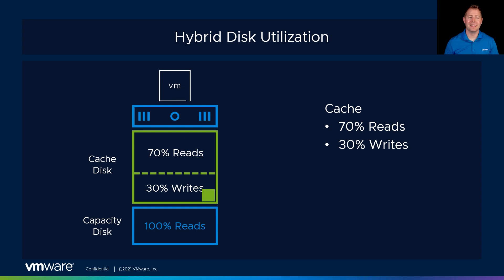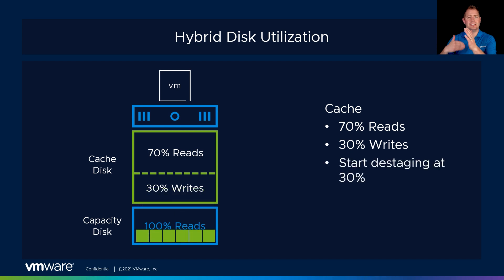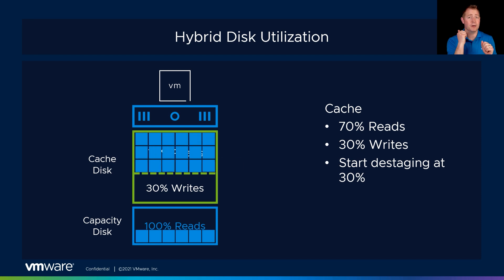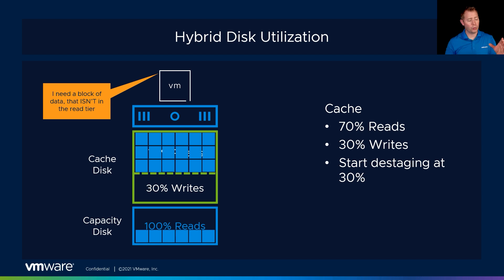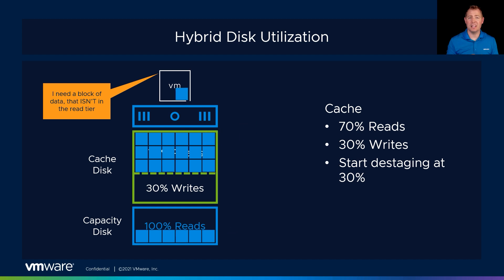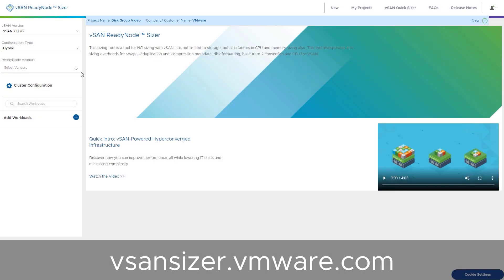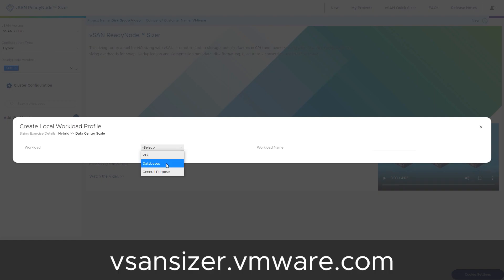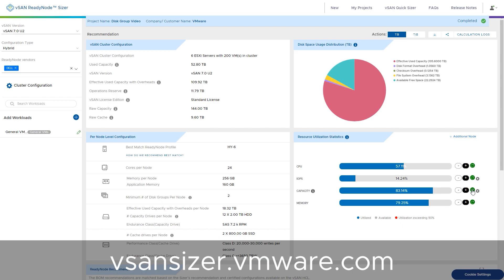For the write tier, we start there first. As VMs need to write a block of data, it hits that write section first. Then as it fills up, we start de-staging data down to our capacity disk where we have those spinning disks. For read purposes, if a VM needs to read a block of data, it'll go to that 70% allocation and pull that block back. vSAN likes to keep that read tier nice and full. If we try to pull a block up and the read allocation is full, we look for the oldest block of data and evict it to make room. For the cache disk in a hybrid environment, it's really important to size it correctly. We have a tool called the VM Sizer that lets you plug in all the different numbers to figure out the appropriate size for your environment.